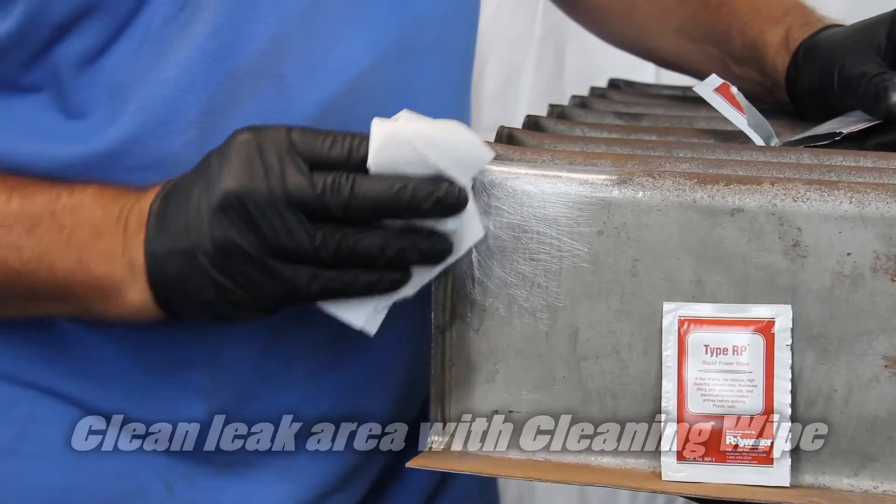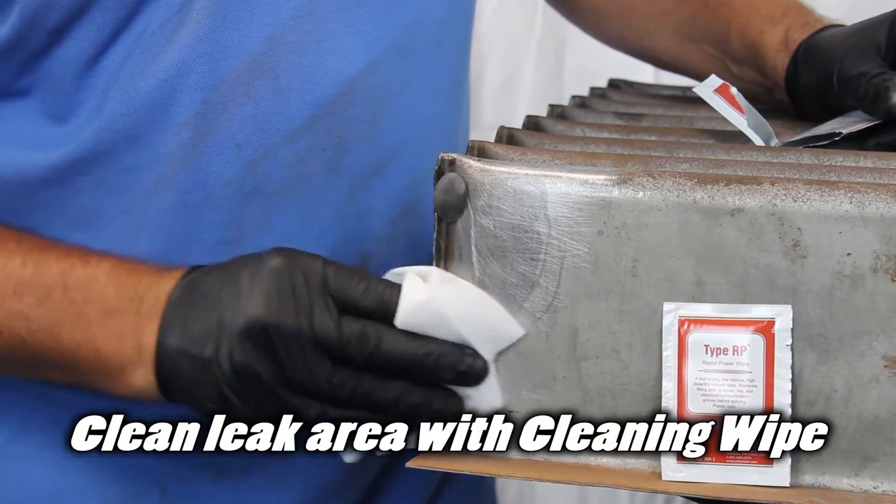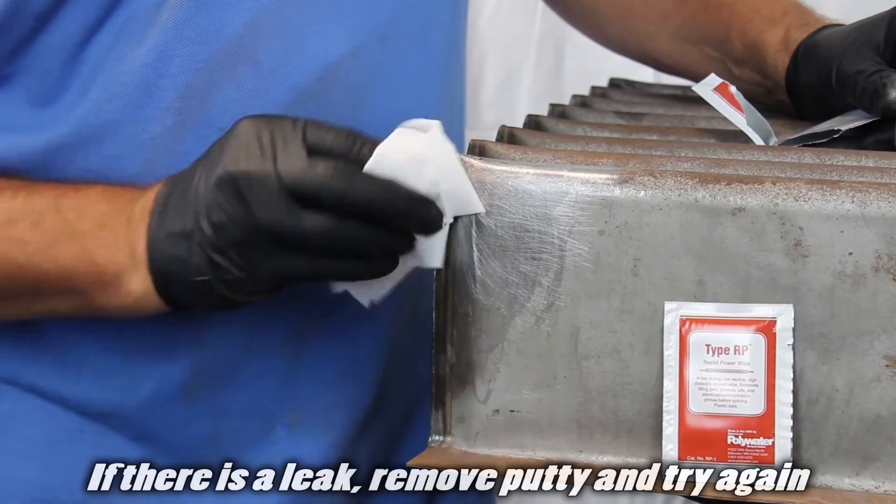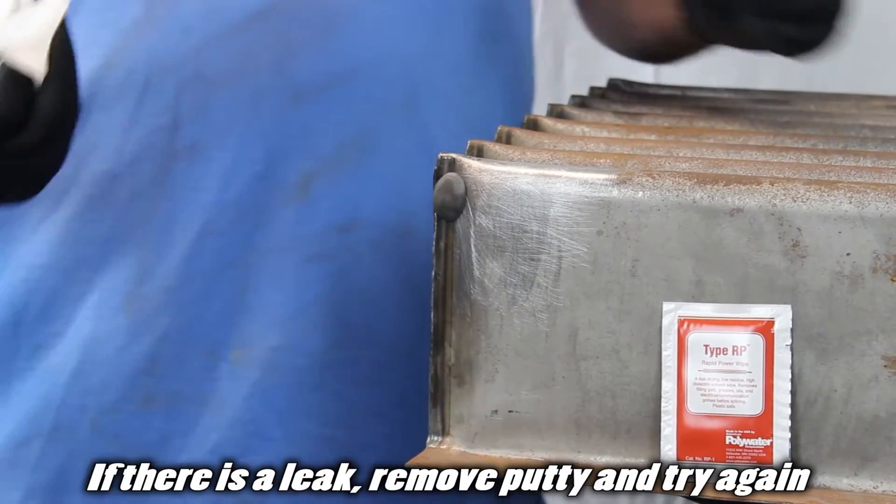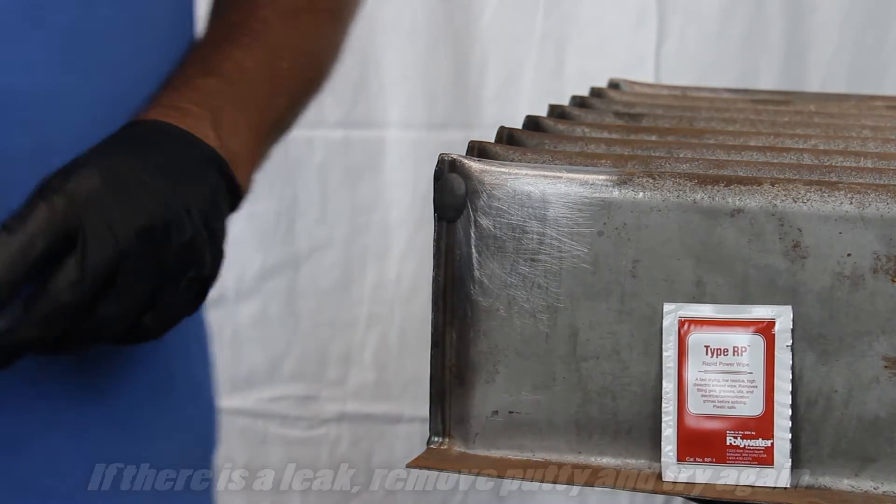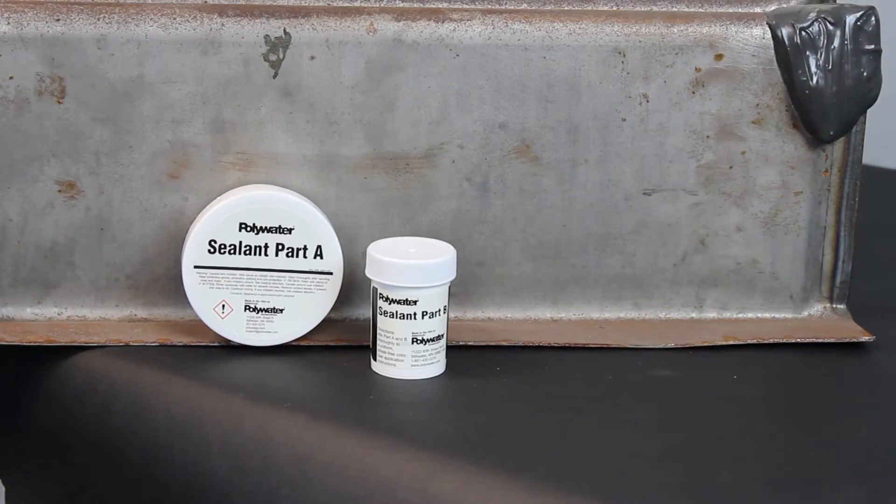Clean area again with the cleaning wipe provided. Make sure there's no leak. If there is a leak, remove putty and try again. Now you're ready to install the permanent power patch sealant.